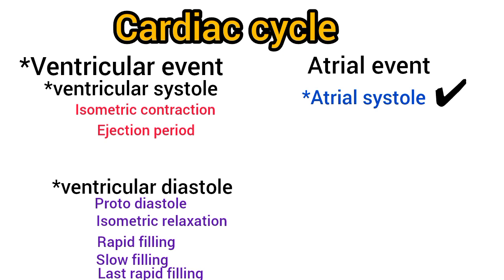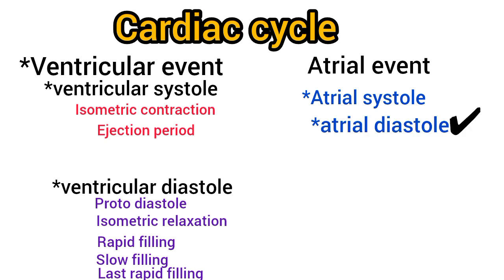Atrial systole is not essential for the maintenance of circulation. After the atrial systole, the atrial diastole starts. Simultaneously, ventricular systole also starts. Atrial diastole lasts for about 0.7 seconds. This long atrial diastole is necessary because this is the period during which atrial filling takes place.